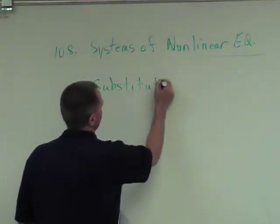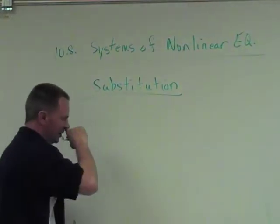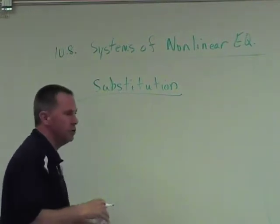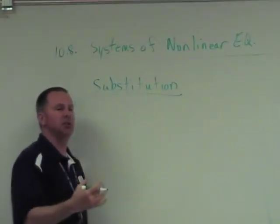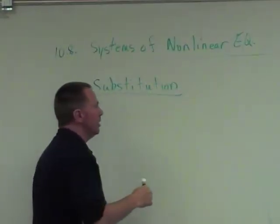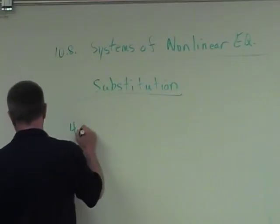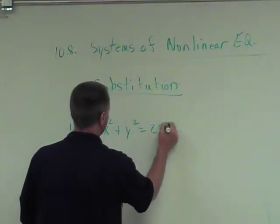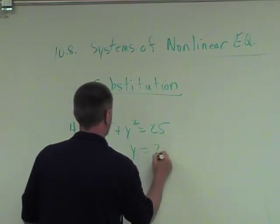I'm just going to show you three different types. Substitution is going to be the first part. Everybody knows how to do substitution, so there isn't anything new to show you. Let's look at number four in your book. This is going to be x squared plus y squared equals 25 and y equals 2x.